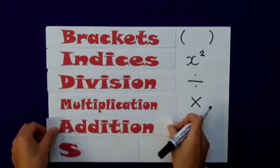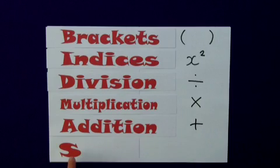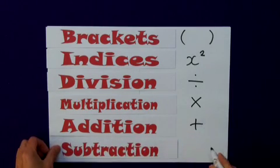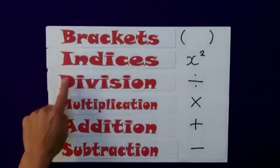A is your addition. And finally, S, I presume you can guess at that one, would be subtraction. And that is BIDMAS.